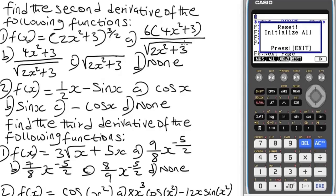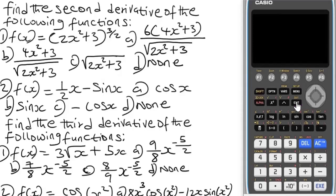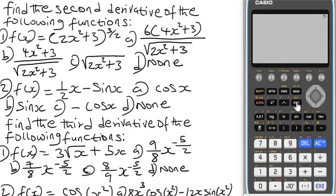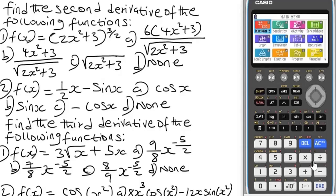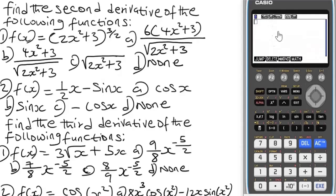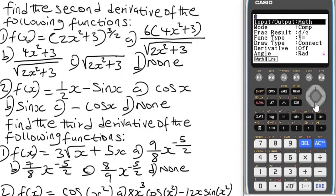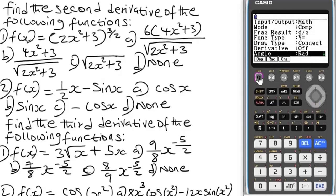Press EXE. Now the next thing you have to do is ensure that the calculator is in radian mode — very important. By default mine is already in radian mode. If you press EXE, go to the matrix menu, you will see it is in radian. To put it in radian, press Shift, then the menu button, navigate down to Angle. Press F2 and it will change to radian.